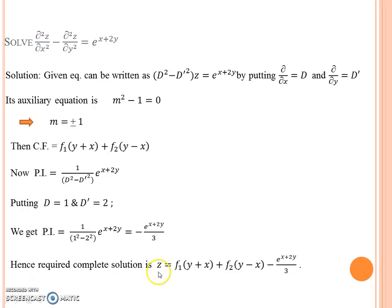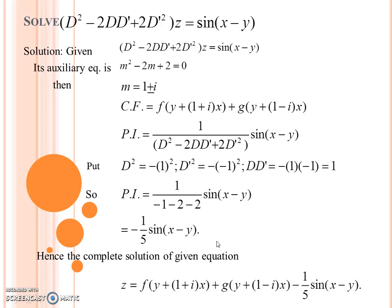So the complete solution is z equal to CF plus PI. Now consider the next question: (D² − 2DD' + 2D'²)z equal to sin(x − y).